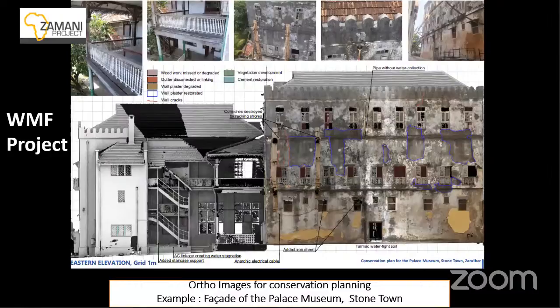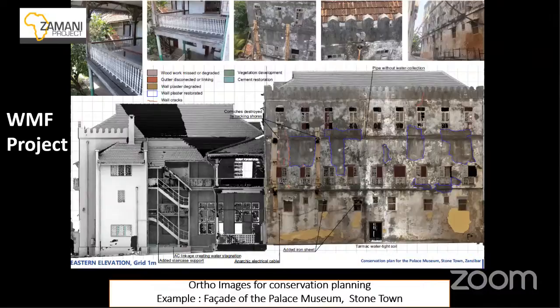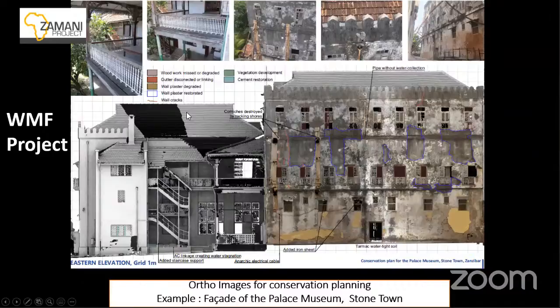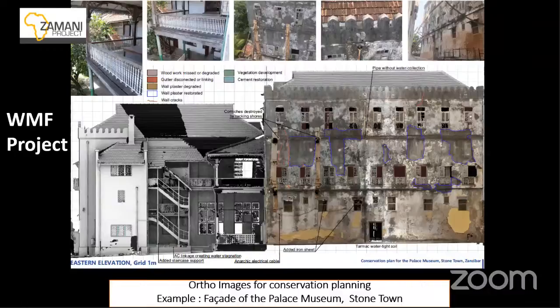This is the Palace Museum in Zanzibar — the former palace of the Sultan of Zanzibar, turned into a museum. It is in a pretty bad state; a lot of Zanzibar is in very bad condition because of decay. The weather conditions are harsh there; this building is about 120 years old. We worked for the World Monument Fund. They added information and used our models extensively for their conservation projects — the textured model was used for their conservation planning.